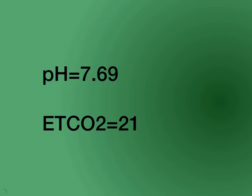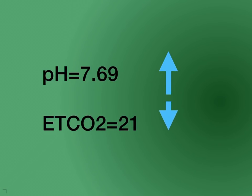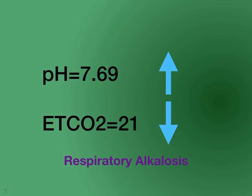pH is 7.69, which is up, and an end-tidal CO2 of 21, which is down. Here the arrows are moving in opposite directions, so respiratory opposite — I know this is respiratory. And with a pH of 7.69, that's alkalotic, so this is respiratory alkalosis.